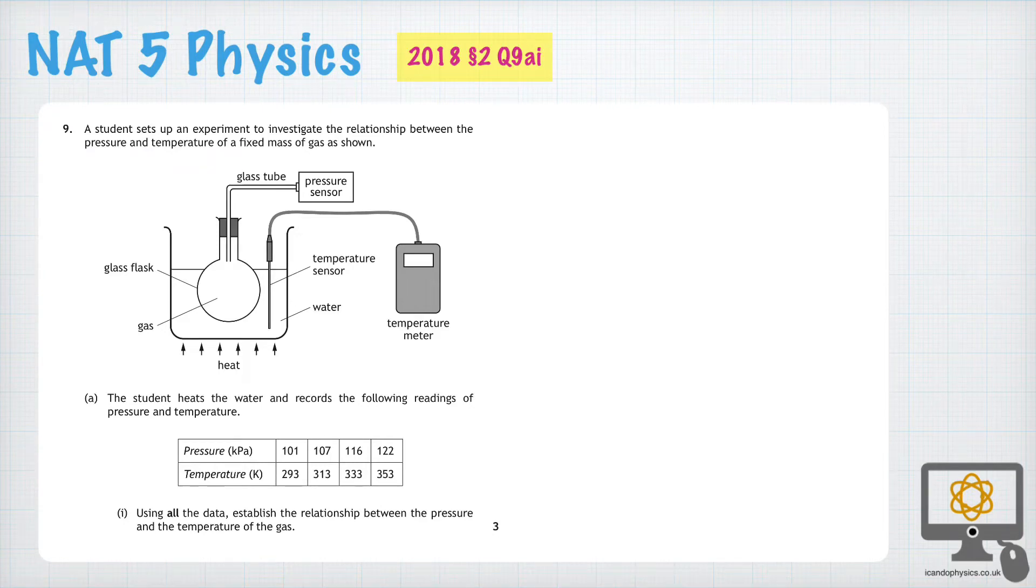Question 9a part 1 was a very difficult question from this 2018 National 5 Physics paper. It says use all of the data to establish the relationship between pressure and temperature.